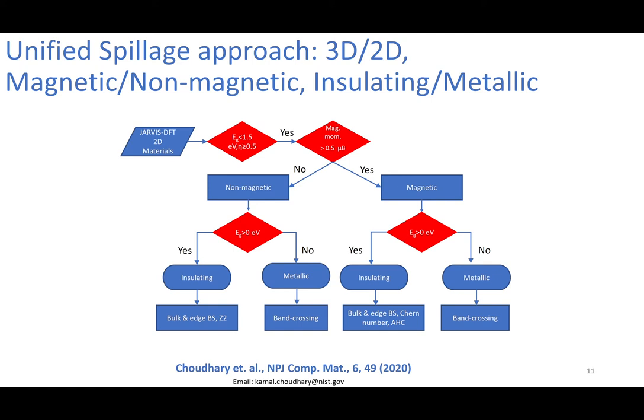We have around 1000 2D material database, so we chose only less than 1.5 eV materials which are exfoliable and we found which of these materials had high spillage more than 0.5. If it's a material with high magnetic moment, we do several sub-calculations such as the bulk and edge band structure, Z2 and Chern number calculation, anomalous Hall conductivity calculations, and so on to classify them. The work is published in the NPJ Computational Materials Science journal. You can find more details there.